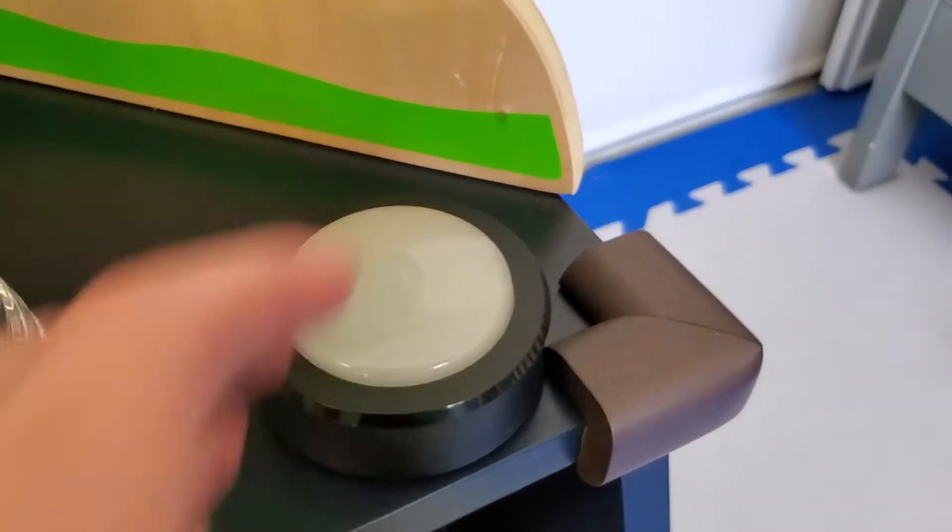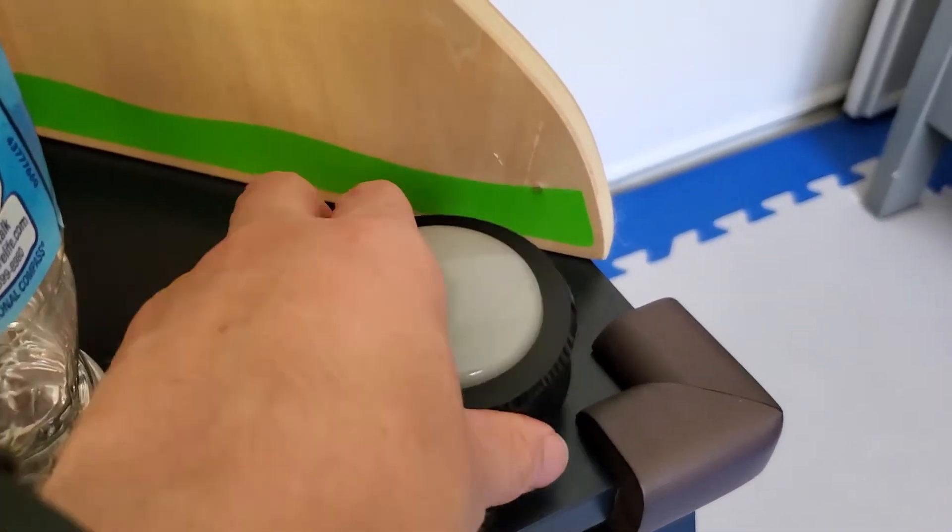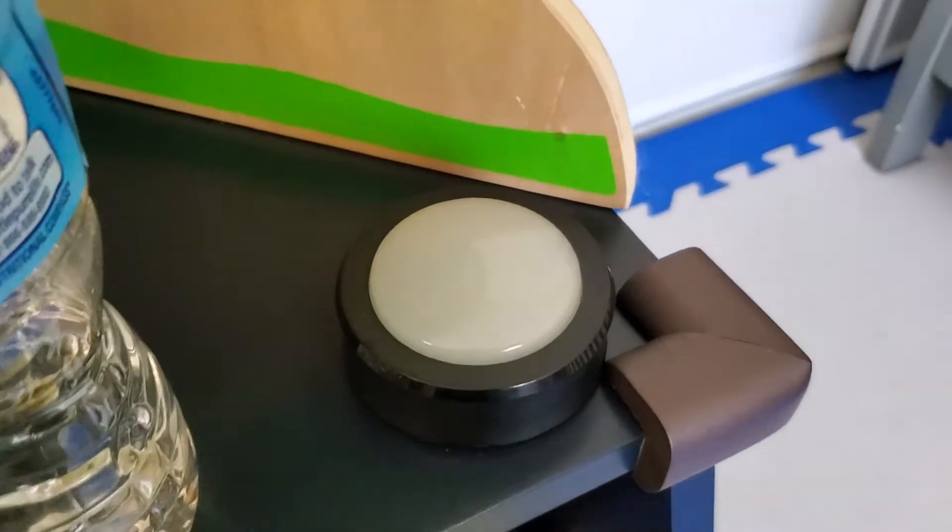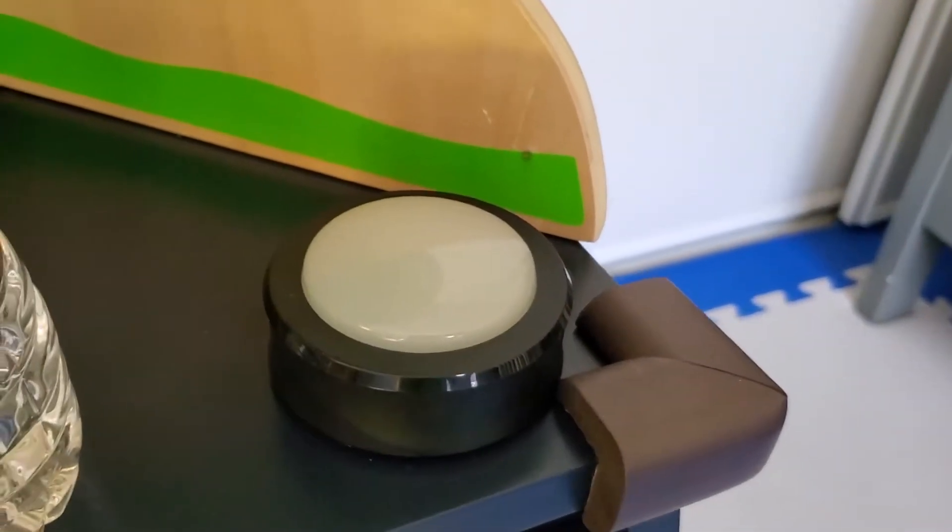So this is an Amazon Echo button. You can get these. They're pretty cheap. It's two for about $20 to $25. You can get them on Amazon, and I'll show in other videos how you set them up.